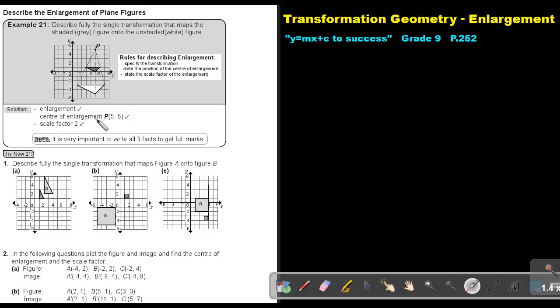So we say the center of enlargement is P and that's 5, 5. We give the coordinate point. And now we must look at this horizontal line to find the scale factor. So say 1, 2, 3, 4, 5, 6.